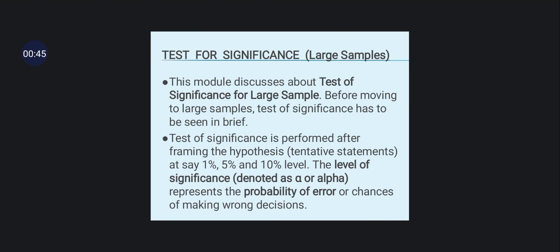This module discusses the Test of Significance for Large Samples. Before moving to large samples, the Test of Significance is performed after framing the hypothesis — tentative statements — at the 1%, 5%, and 10% significance levels. The level of significance, denoted as alpha, represents the probability of error, or the chance of making a wrong decision.